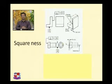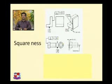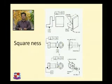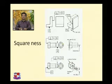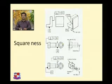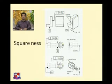Another example of squareness: the perpendicularity is 0.1 and the defined surface A is shown here. Another symbol shows the value with datum defined as A, and with respect to this datum, the perpendicularity of this portion is 0.1 mm. An isometric view represents this symbol.